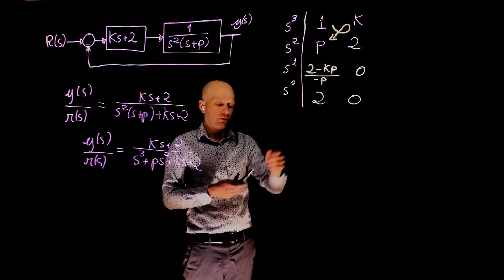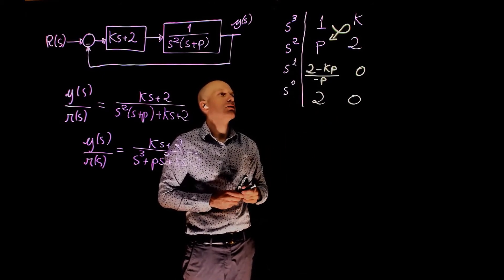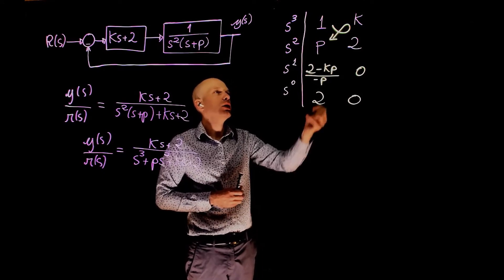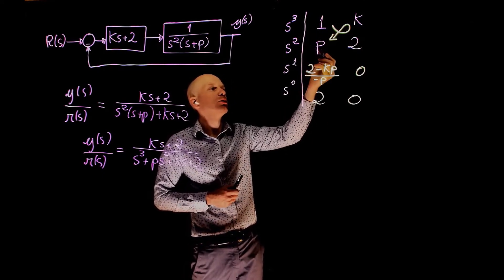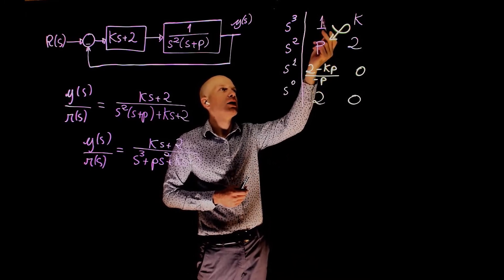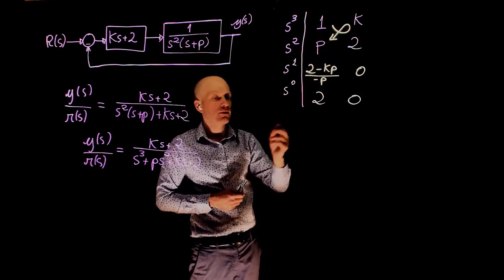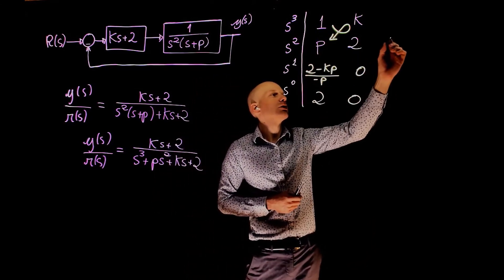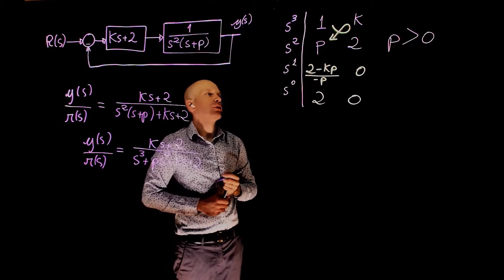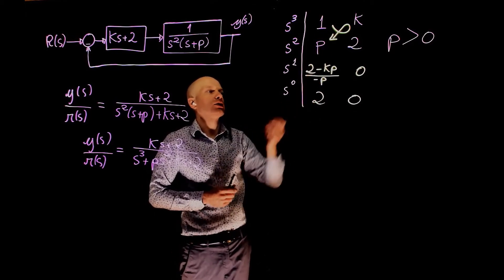Now that we have the array, we can look at the first column to determine the stability condition. We want no sign changes in the first column. So here we go from positive 1 to p. The first condition for stability is that p has the same sign as the number that we have here. So this is positive, which implies that for stability, p needs to be greater than 0. If p is negative, then you have one sign change.